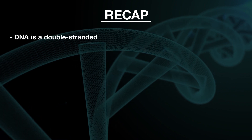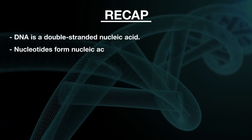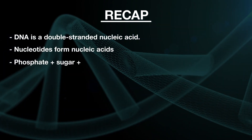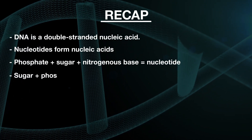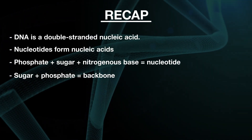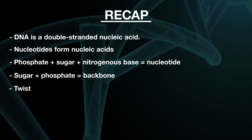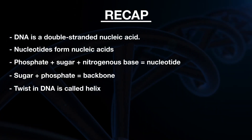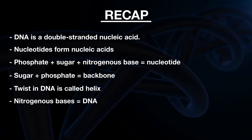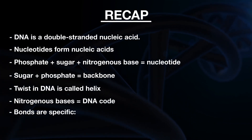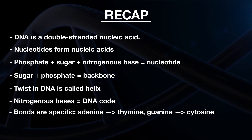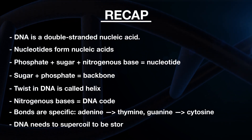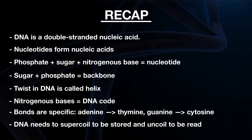That was a lot of information. Let's do a quick recap. DNA is a double-stranded nucleic acid constructed of nucleotides. Each nucleotide consists of a phosphate, a sugar, and a nitrogenous base. The sugars and phosphates bind together strongly to create a stable backbone. The phosphates bind to different carbons on the sugar, resulting in the twist we call the helix. The nitrogenous bases contain the code for the DNA and bond in a specific way — adenine with thymine, guanine with cytosine. DNA strands are super long, and to fit in your cells they need to be coiled and supercoiled into chromatin and then chromosomes. Next time, we're going to delve into how that DNA is used by your cells.